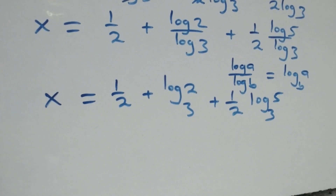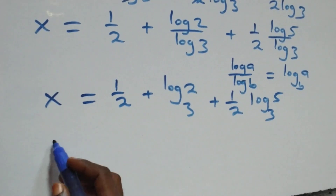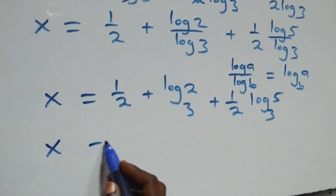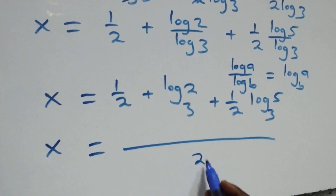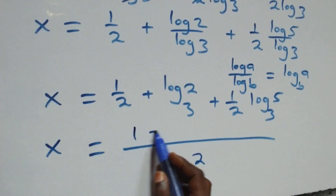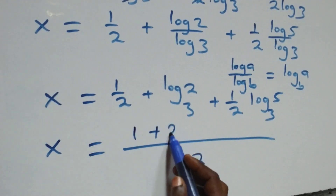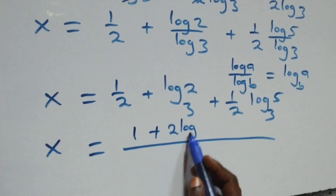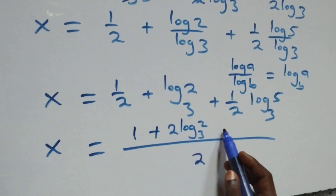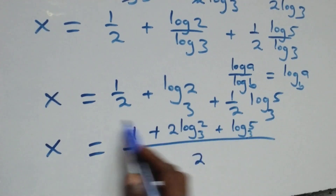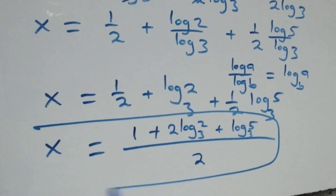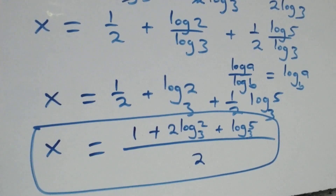Combining into a single fraction, x equals 1 plus 2 log 2 to base 3 plus log 5 to base 3, all over 2. Now let's verify that this satisfies the original equation.